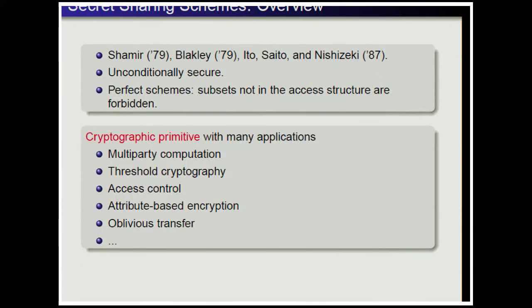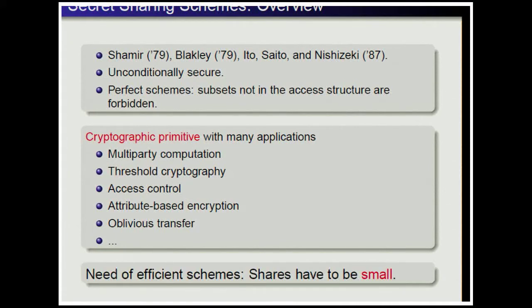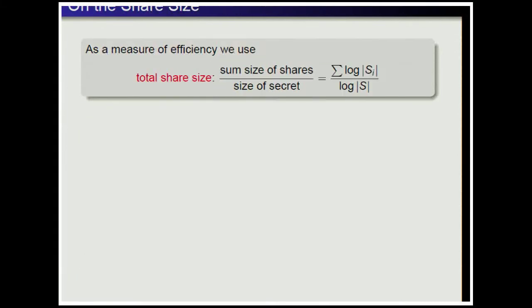Secret sharing is a cryptographic primitive with many applications, such as multiparty computation, threshold cryptography, access control, attribute-based encryption, and oblivious transfer. For using secret sharing in these applications, we need efficient schemes — in particular, shares have to be small. In this work, we measure efficiency using the total share size, which is the sum of the sizes of the shares divided by the size of the secret.